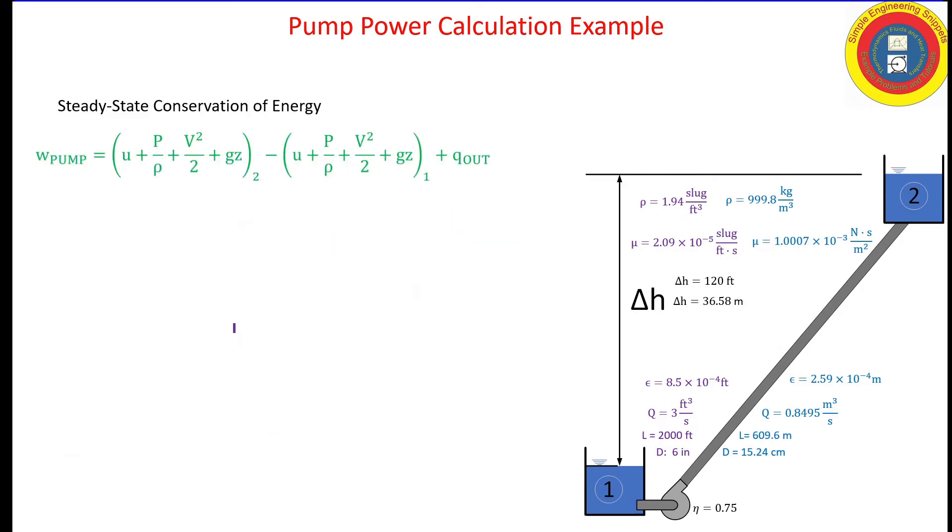When we're working with pumps, sometimes it's more convenient to work in terms of energy per weight. So we will be making that substitution. But first, let's group our like terms. We have a difference in pressure term, a difference in kinetic energy term, and a difference in potential energy term. We're also grouping our change in internal energy and our heat loss term.